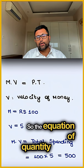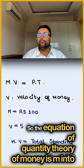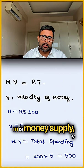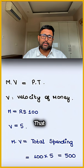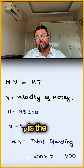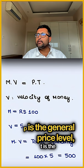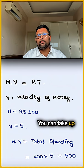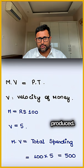The equation of the quantity theory of money is M × V = P × T. M is money supply, V is velocity of money — that is how many times a given rupee note is changing hands. P is the general price level, and T is the number of transactions, which you can take as the amount of goods and services produced.